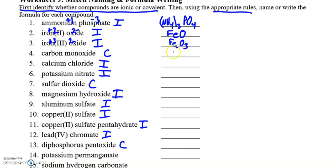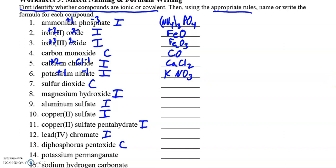Carbon monoxide is covalent — no charges required, just CO. Calcium chloride is ionic. Calcium is in group two, so it's plus two. Chloride is minus one based on its position on the periodic table, so it's going to be CaCl₂. Potassium nitrate — potassium is plus one, it's in group one. Nitrate is a minus one polyatomic ion, just put them together. Sulfur dioxide is covalent — just use the prefixes, so SO₂.